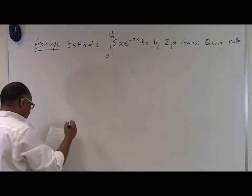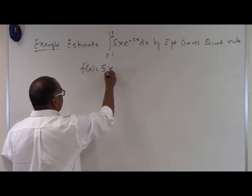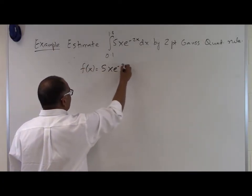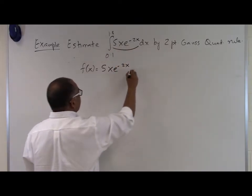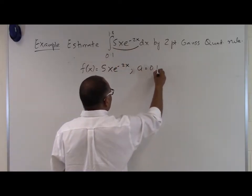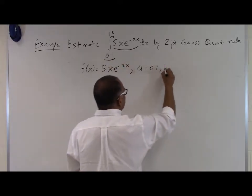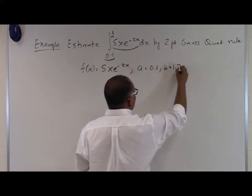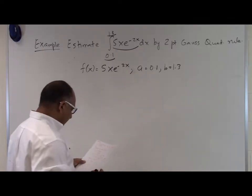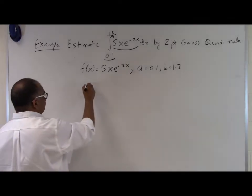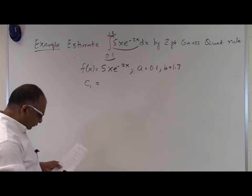For our case, f(x) is 5x times e to the power of minus 2x, because that is the integrand. The lower limit a is 0.1, and the upper limit b is 1.3. So based on that, let's calculate the values c1, c2, x1, and x2 for the formula.